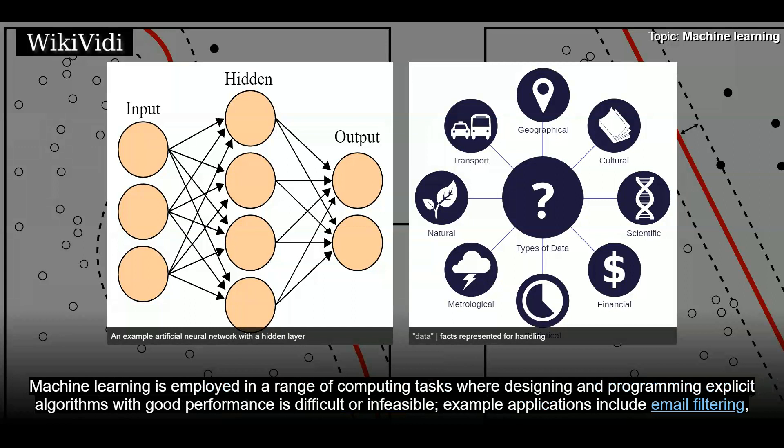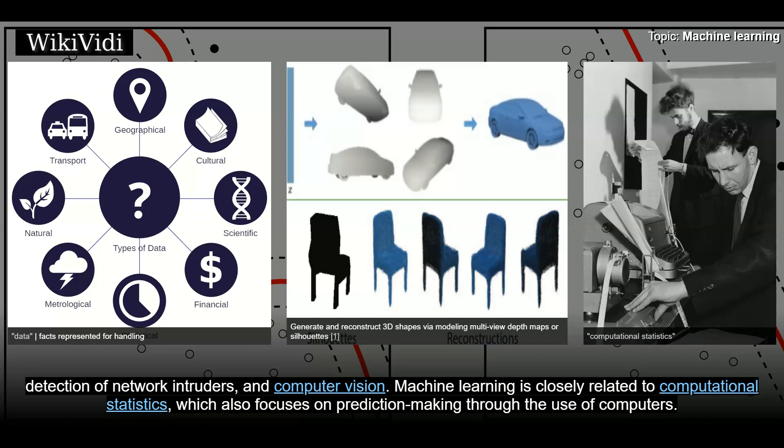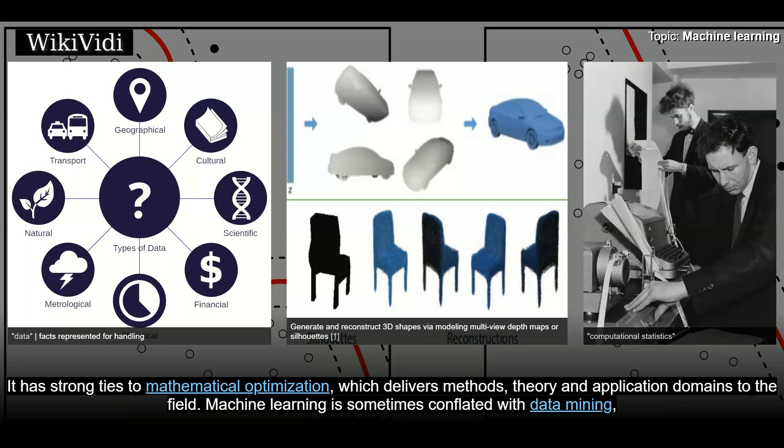Machine Learning is employed in a range of computing tasks where designing and programming explicit algorithms with good performance is difficult or infeasible. Example applications include email filtering, detection of network intruders, and computer vision. Machine Learning is closely related to computational statistics, which also focuses on prediction-making through the use of computers. It has strong ties to mathematical optimization, which delivers methods, theory and application domains to the field.